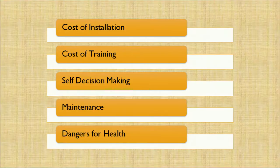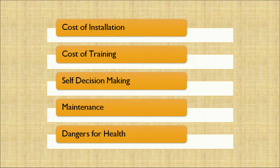Let's now discuss the limitations of a computer. There are majorly five limitations. Number one: cost of installation. Second: cost of training. Third: self-decision making. Fourth: maintenance. Fifth: danger to health.